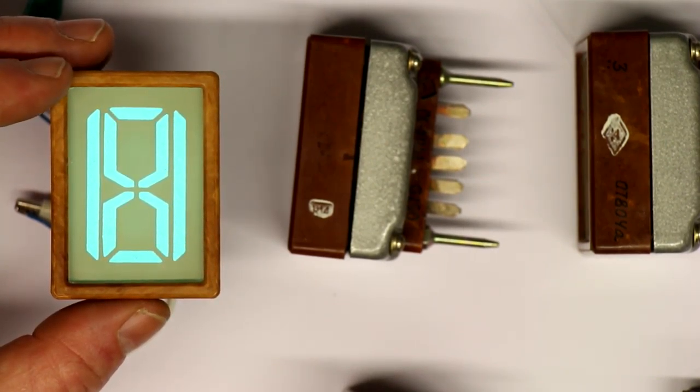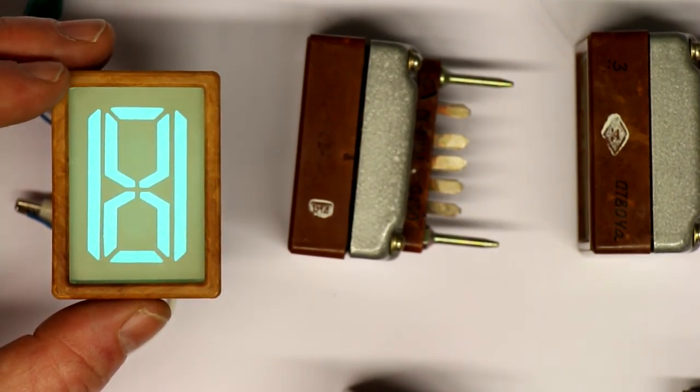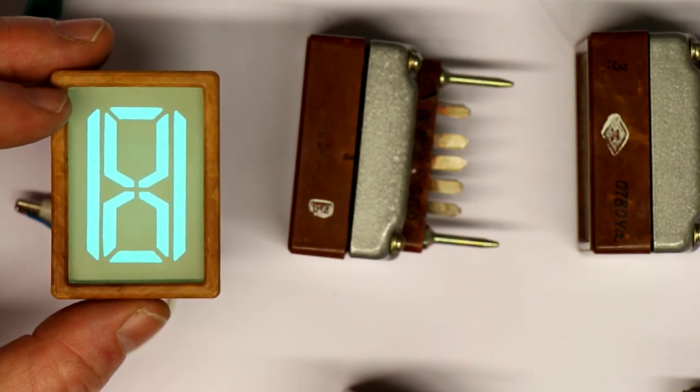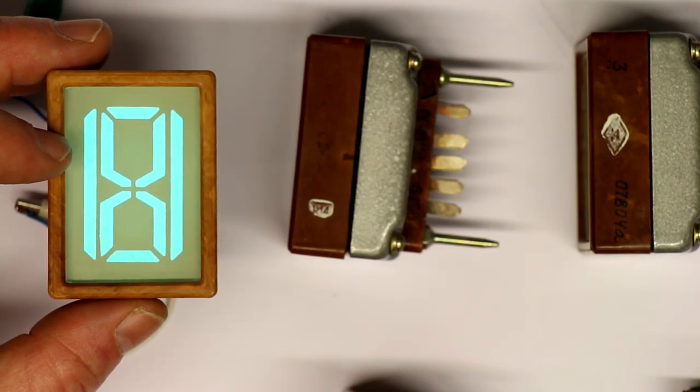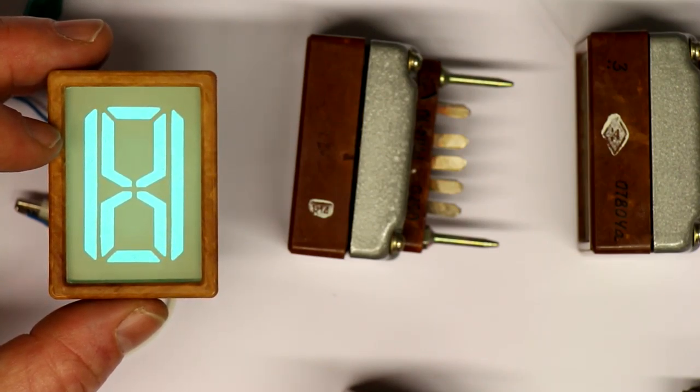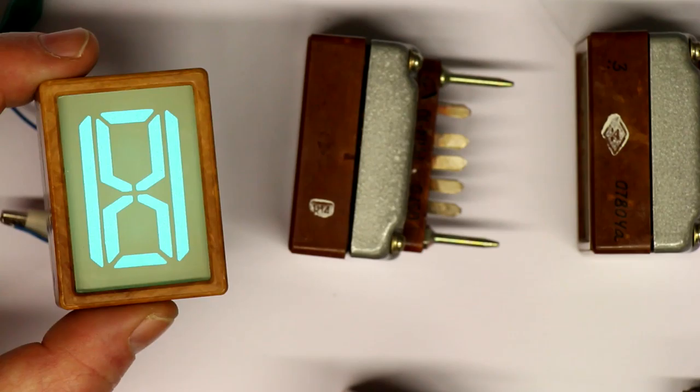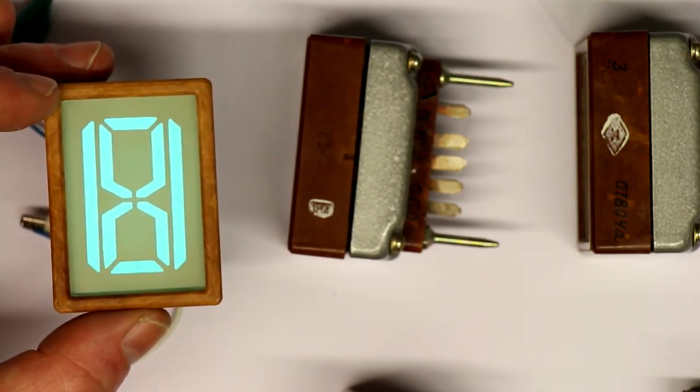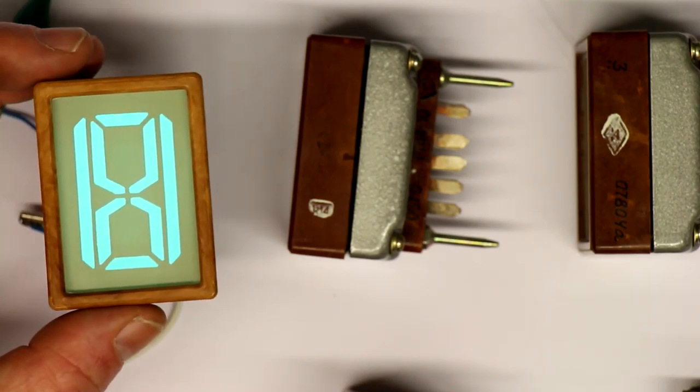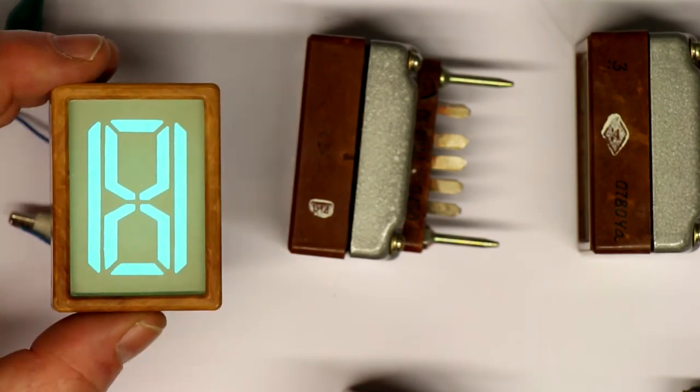They are even today used, for example, as backlighting for dashboards in cars or the backlight of computer displays, laptop displays. And the most often use you can find today is so-called EL wire. So you get also this display type, not only in a planar way, but also as wire.